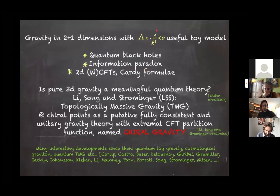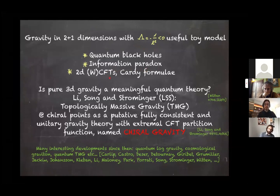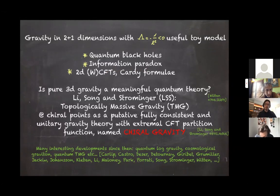Furthermore, with negative cosmological constant, all the AdS/CFT machinery is at work. There are many different boundary conditions studied and therefore many different field theories — CFTs, warped CFTs — and various Cardy-type formulas one can address.